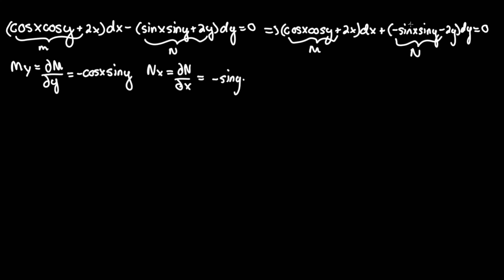This will be multiplied by the derivative of sine x, which is just cosine x. The derivative of negative 2y would be 0 since we are differentiating with respect to x. And as you can see, negative cosine x sine y is indeed equivalent to negative sine y cosine x. Therefore, M_y equals N_x, which is an exact equation.